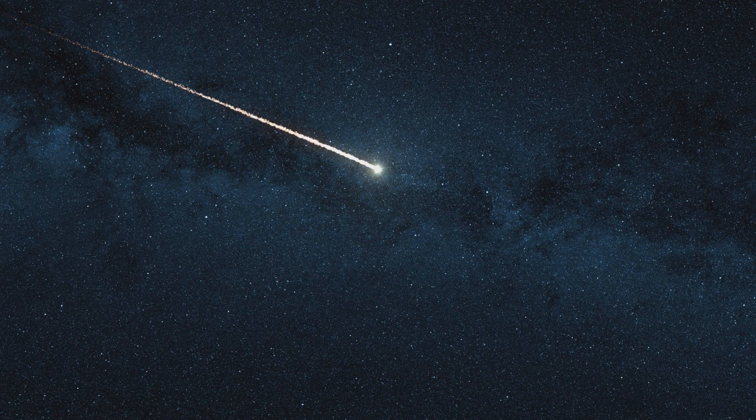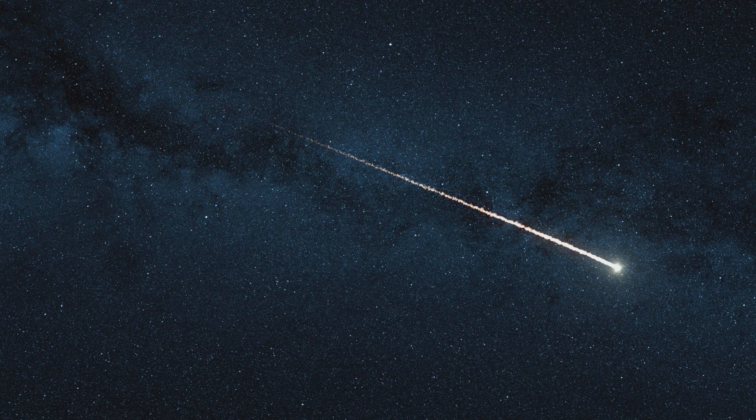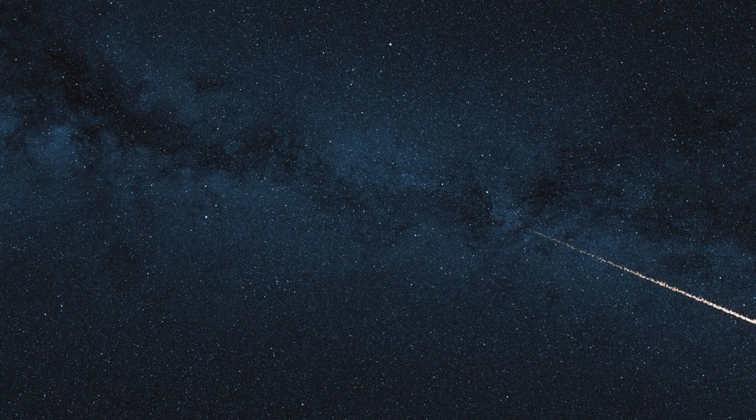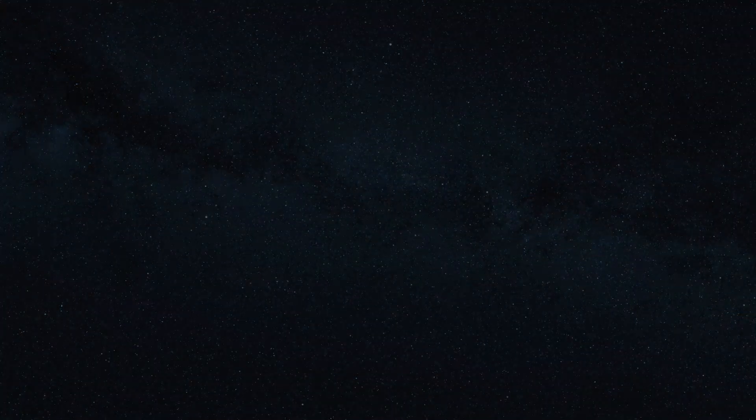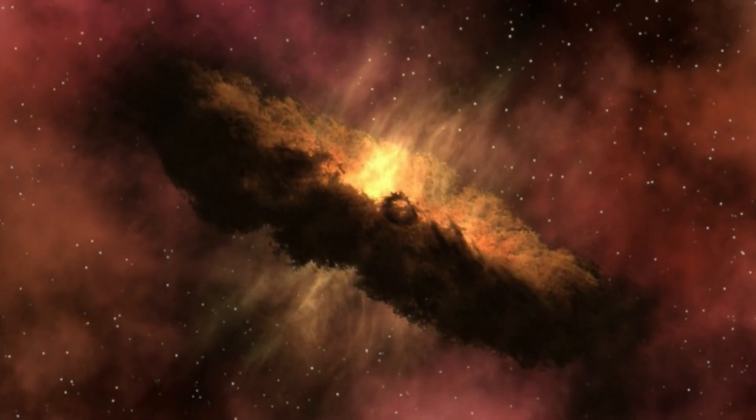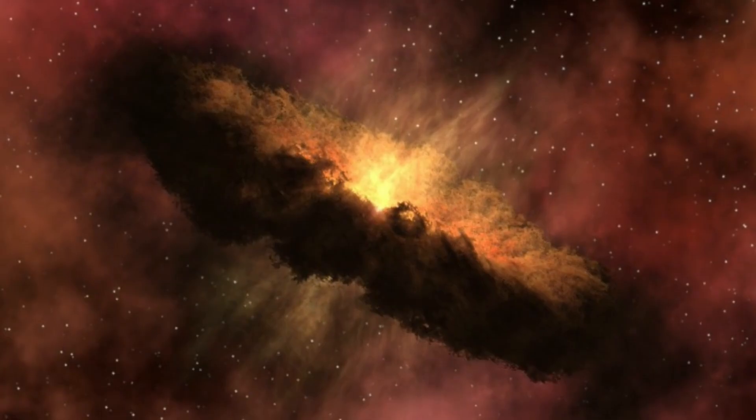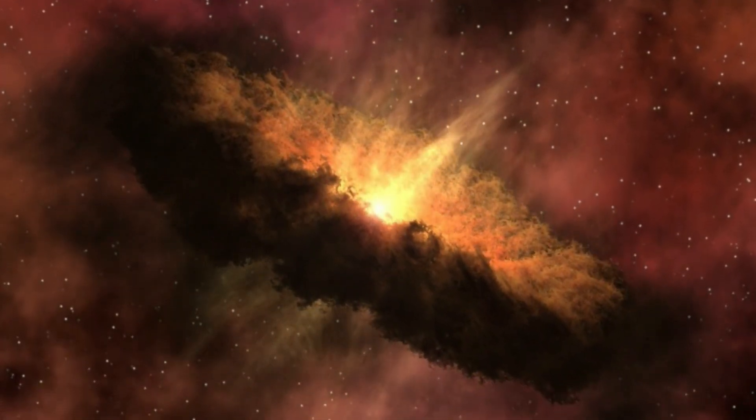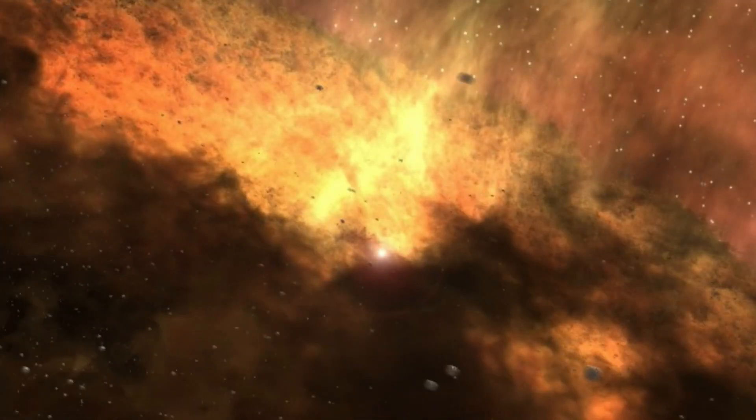While the other comets are part of our solar system, this interstellar object is a cosmic outcast from another star system, a traveler that scientists now believe might be the key to solving a major mystery: how planets form. Its arrival offers a fleeting glimpse into a process happening across the galaxy, and a chance to study a piece of a different star's history.